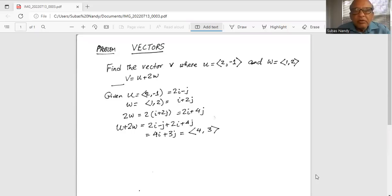Now 2w is 2 distributed in i plus 2j which is 2i plus 4j.